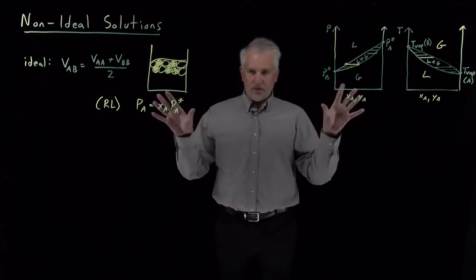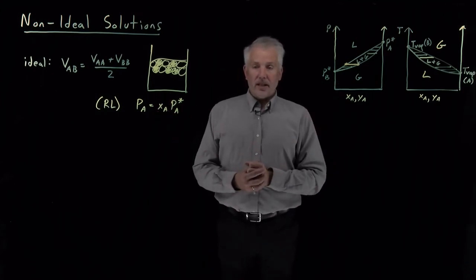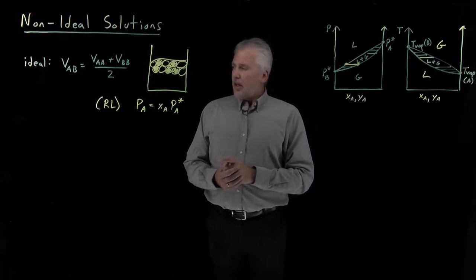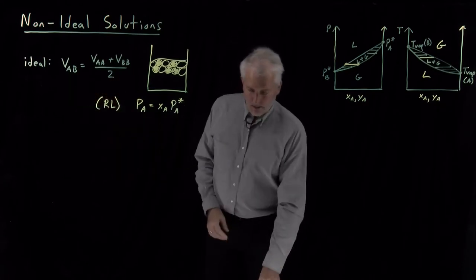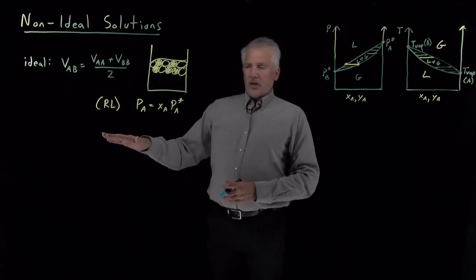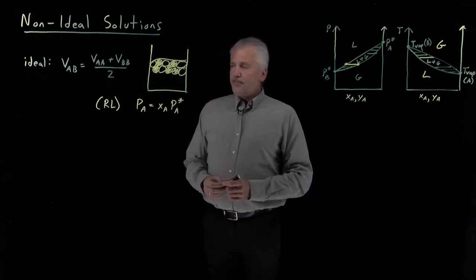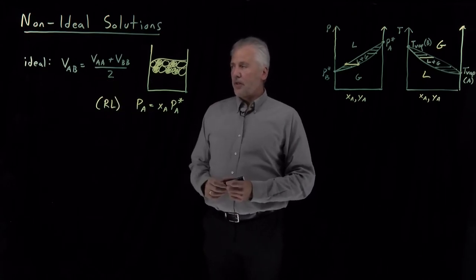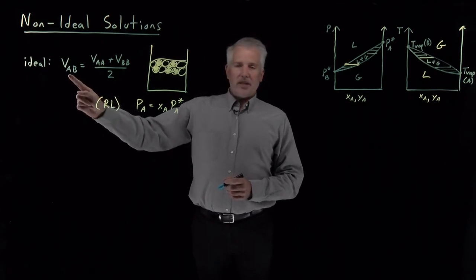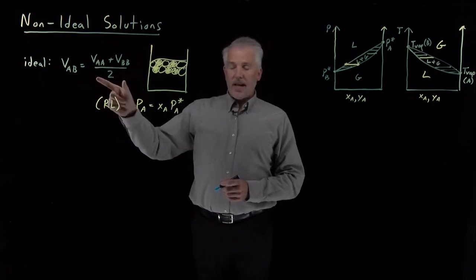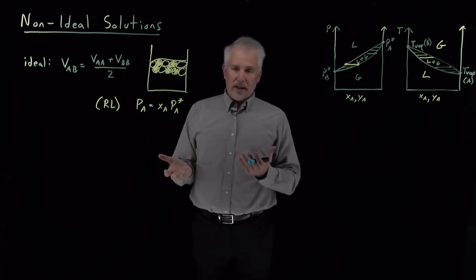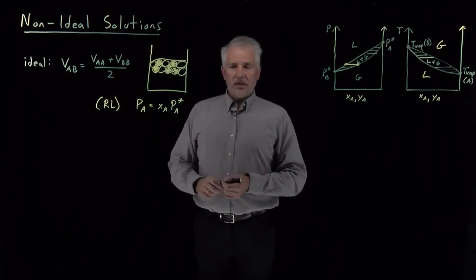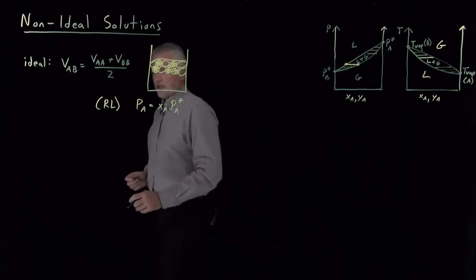Those are the things we want to understand for non-ideal solutions, where the results will be different. If things are not ideal and the AB = avg(AA, BB) assumption doesn't hold, we can go back to the beginning and ask what would be non-ideal and see what the consequences would be. We consider two different cases: the AB interaction can be either stronger than or weaker than that average predicts.